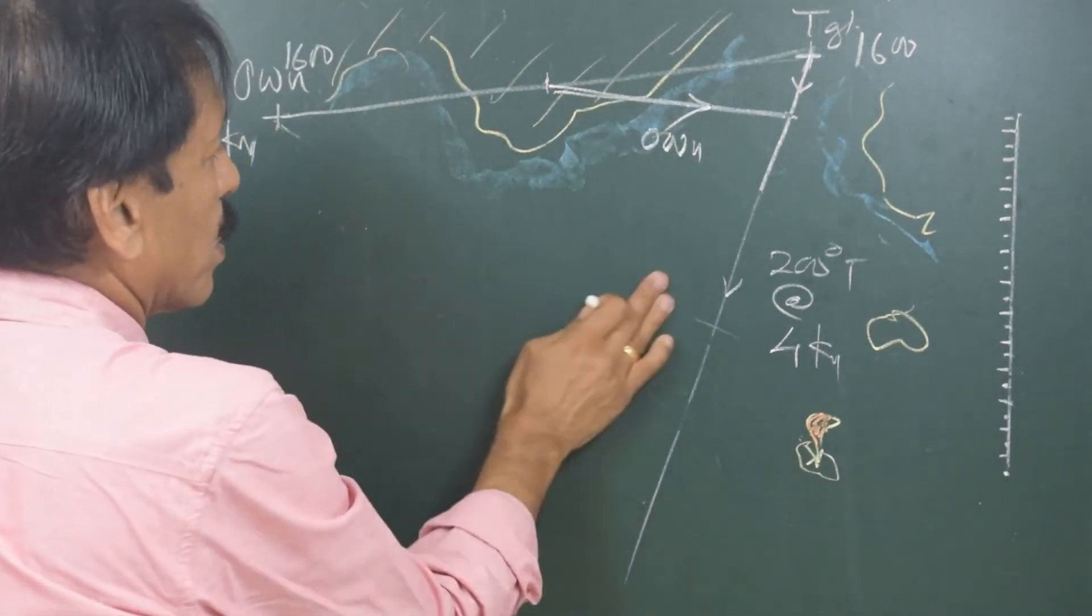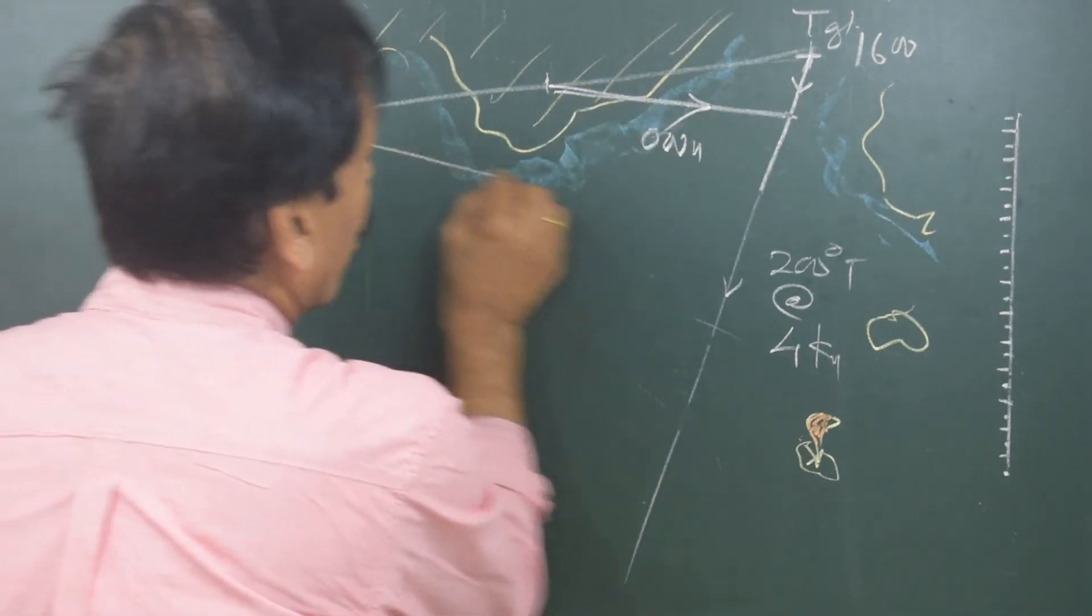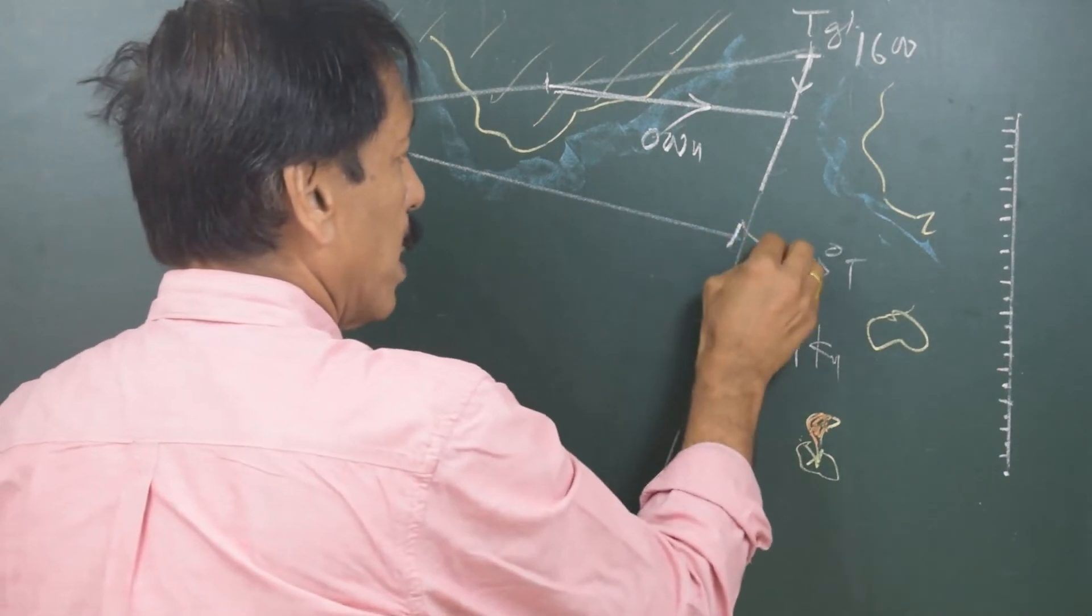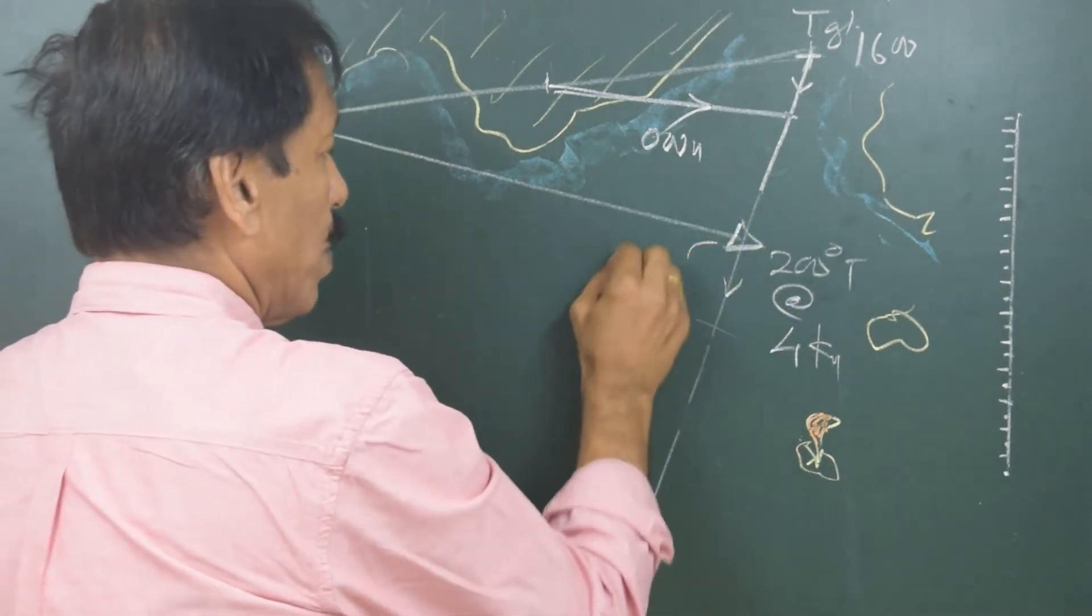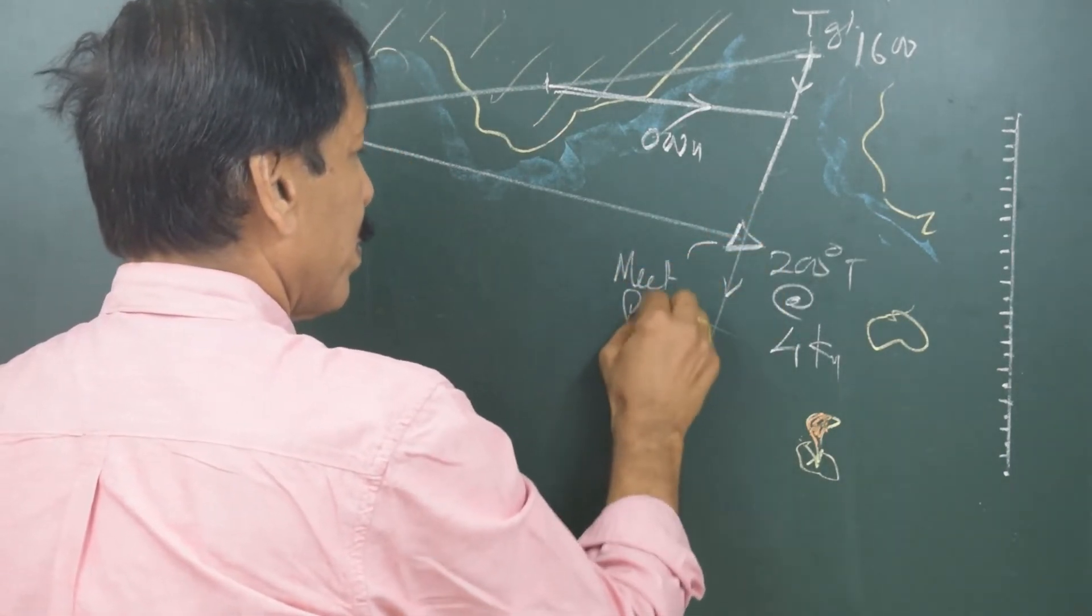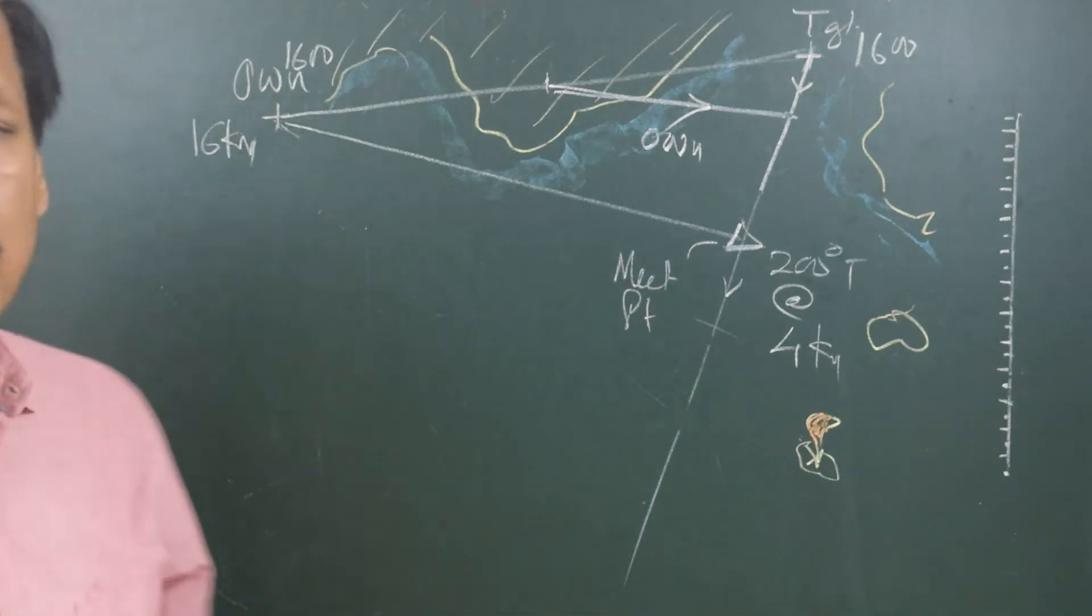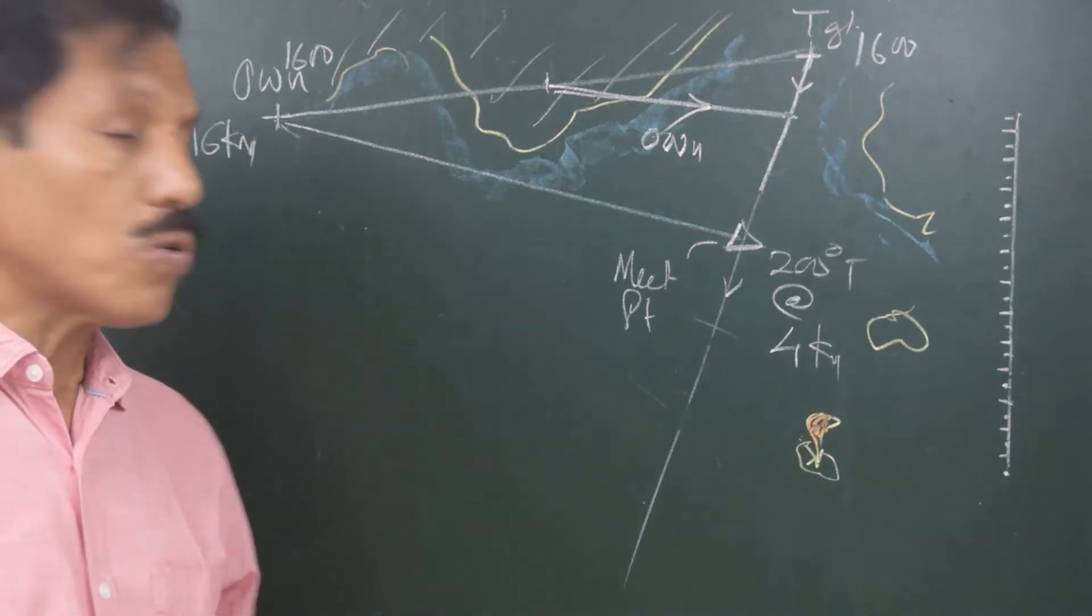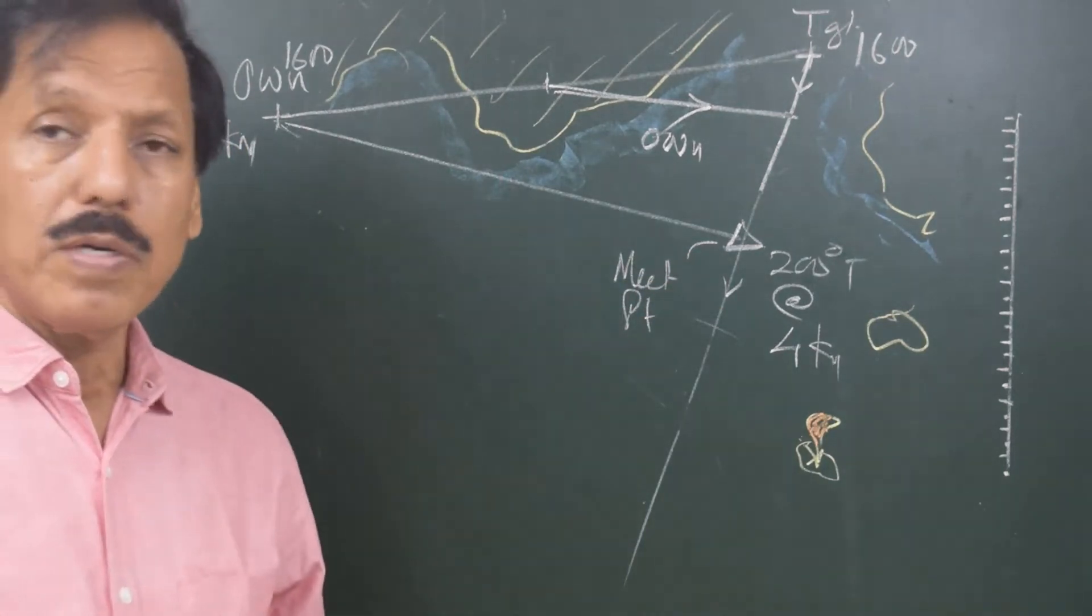This is going to be the meeting point. So this is how it is a very simple two-step exercise to find out what is the course to steer to meet a disabled vessel.